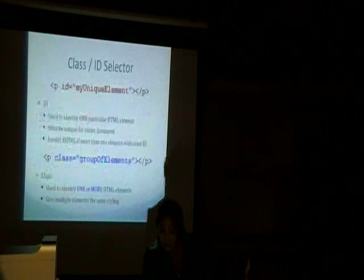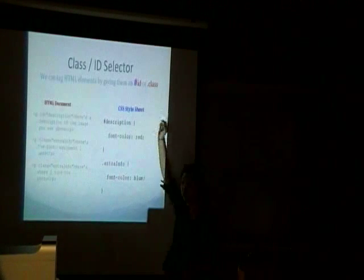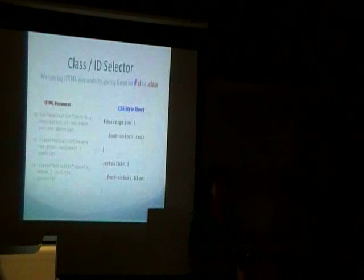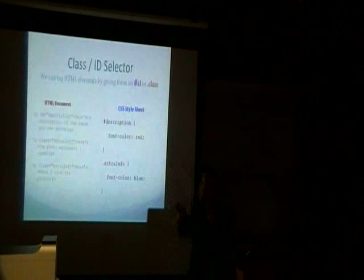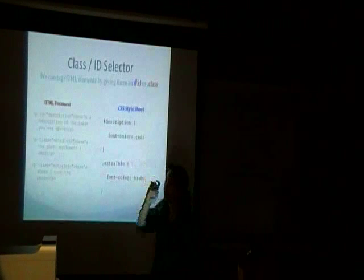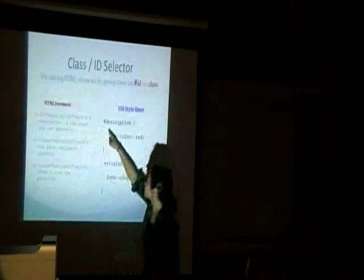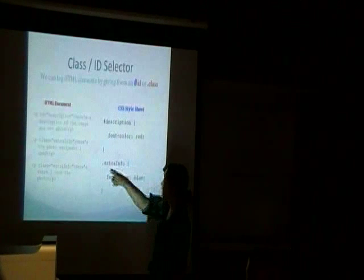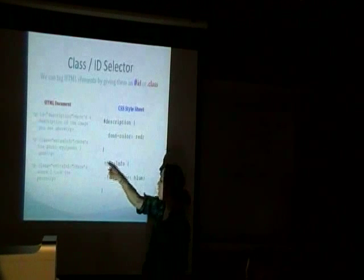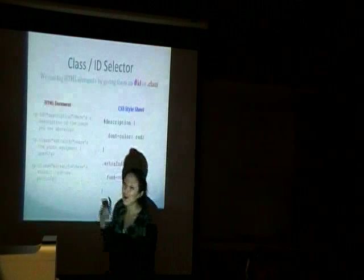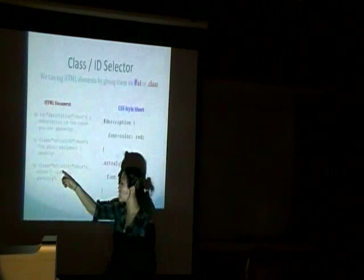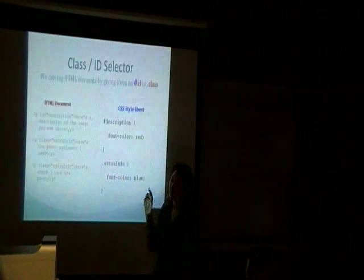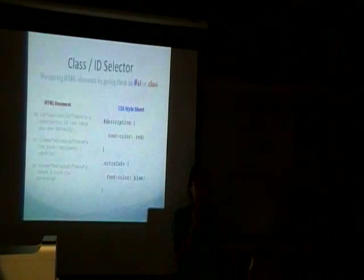You can tag HTML elements by giving them an ID or a class. In your CSS code, for an ID you use a pound sign — so to get the element with ID 'description', you say #description. For classes, you use a dot followed by the class name — for example, .extraHTML to get a paragraph whose class is 'extra HTML'.